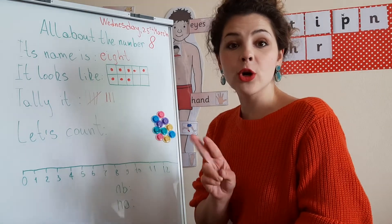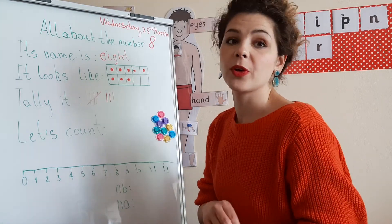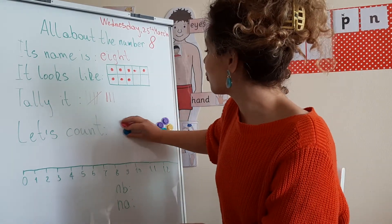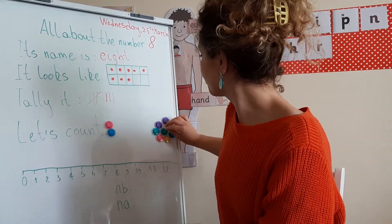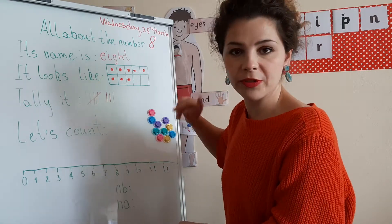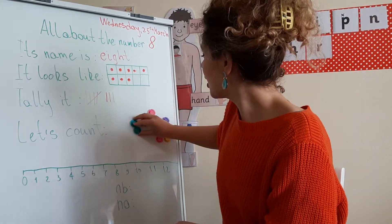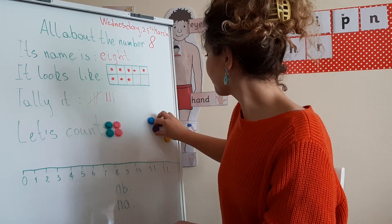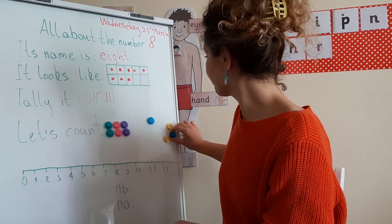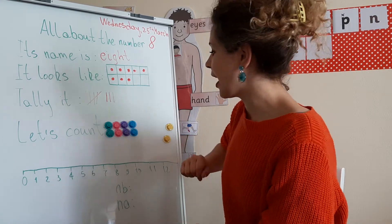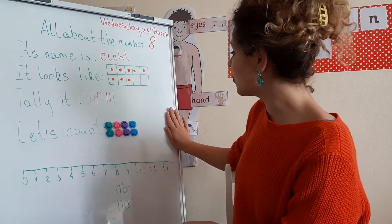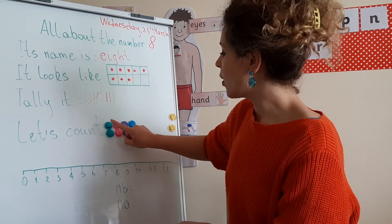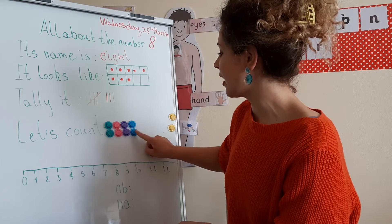Now I'm going to do the same thing but this time I'm going to count in twos. This is called skip counting — you don't say every number. Let's use the same colors: two, four, six, and eight. I still have two left. So here I have two, four, six, eight — one, two, three, four, five, six, seven, eight. These are eight things.